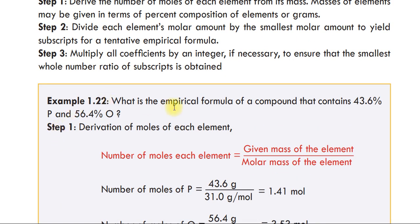Example: What is the empirical formula of the compound that contains 43.6% of phosphorus and 56.4% of oxygen?